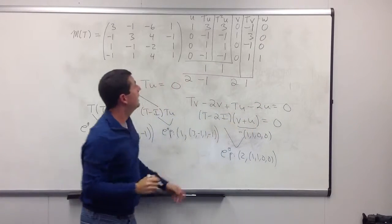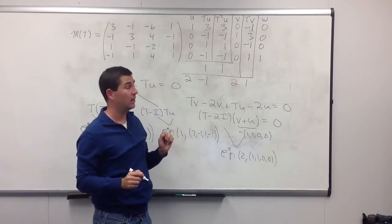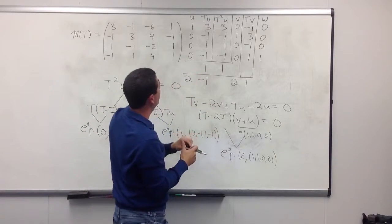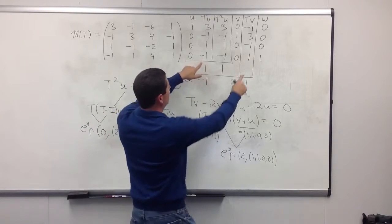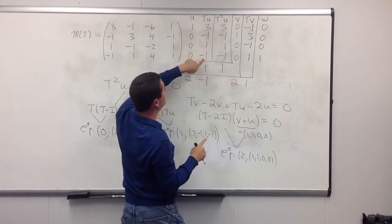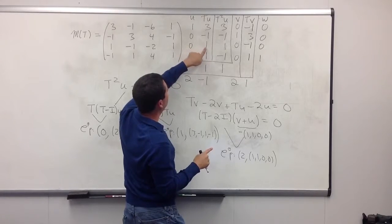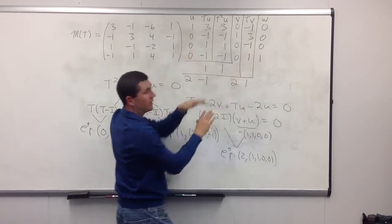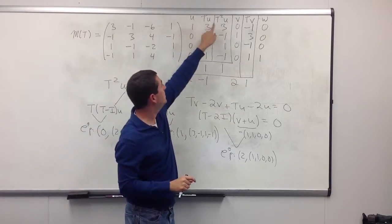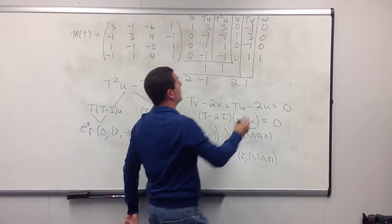Now, could it be that w was actually in the span of u, Tu, and v already? Let's take a look. Well, if it was, then I would have to be able to, let's see, I would have to use negative 1 of these Tu's. But then, oh dear, that's not good at all, because then I would have negative 1 from here, and I'd have a 0 here. That's not possible. So, it's not a linear combination of u, Tu, and v. So, I have still a linearly independent list.